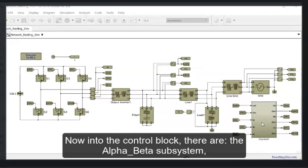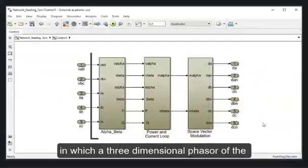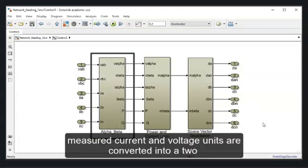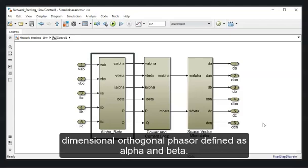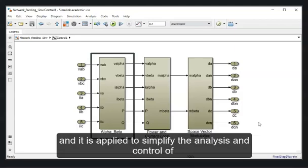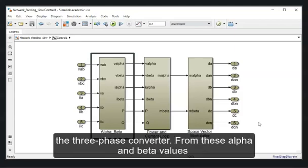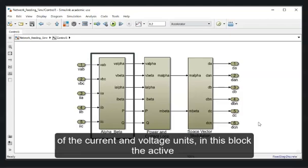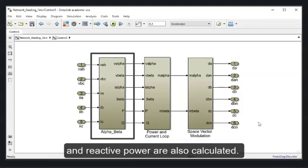Now, into the control block, there is the alpha-beta subsystem, in which a three-phase dimensional phasor of the measured current and voltage units are converted into two-dimensional orthogonal phasor, defined as alpha and beta. This conversion is performed using Clark transform, and it is applied to simplify the analysis and control of the three-phase converter. From these alpha and beta values of current and voltage units, in this block the active and reactive power are also calculated.